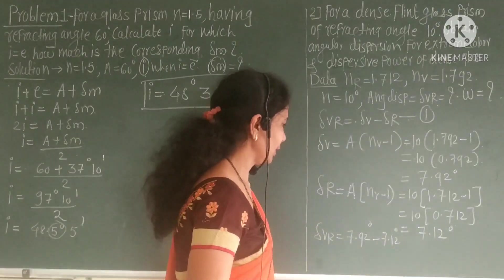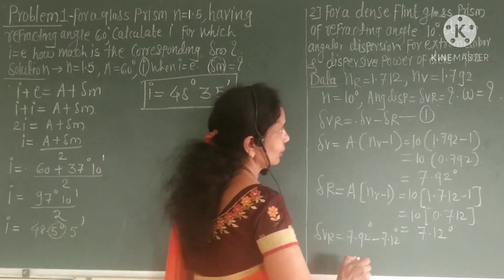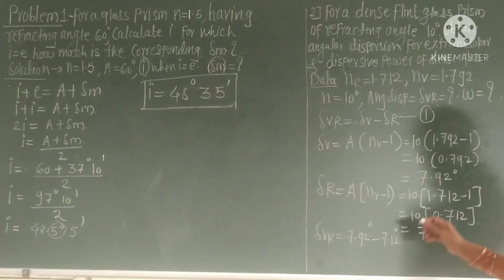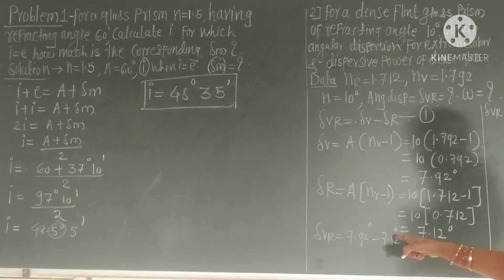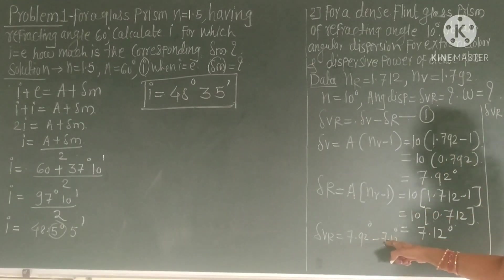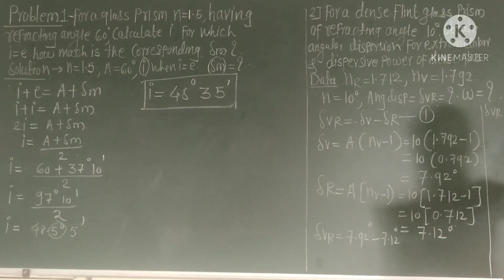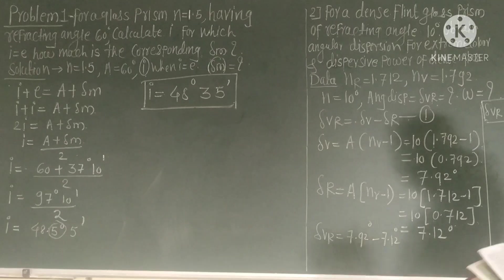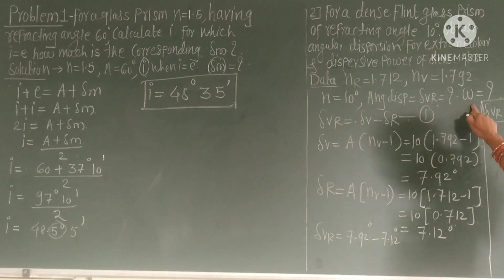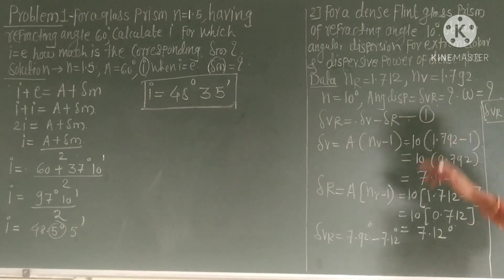Therefore δvr equals 7.92 degrees minus 7.12 degrees equals 0.80 degrees. This is the value of angular dispersion. It is straightforward. Now we calculate omega, the dispersive power.